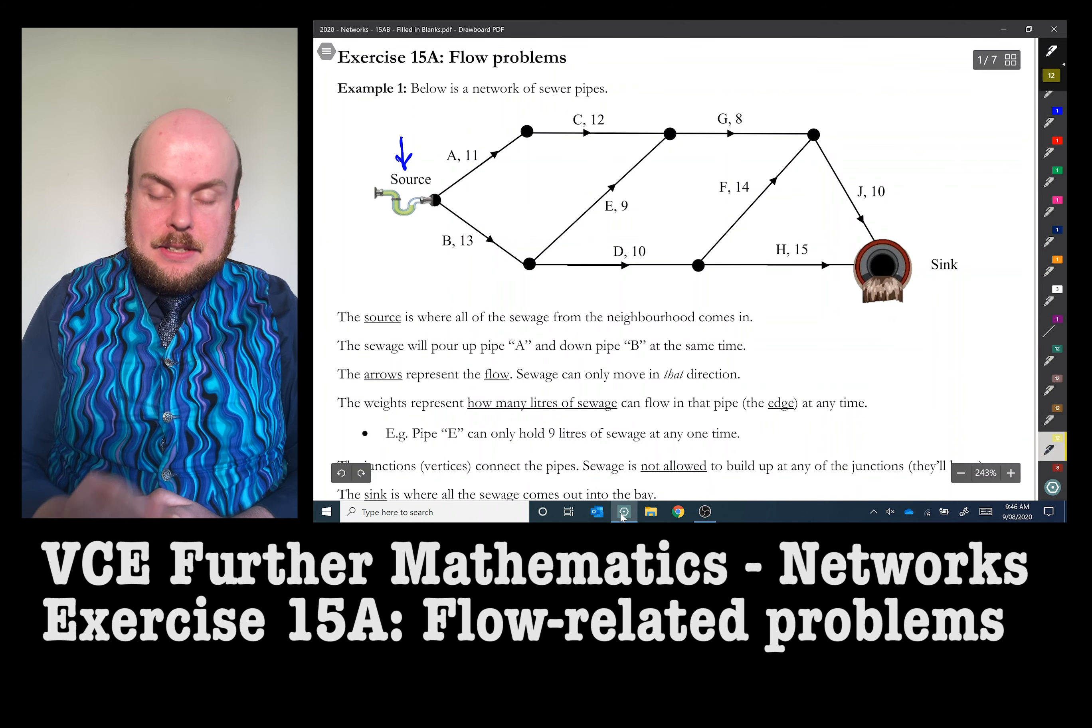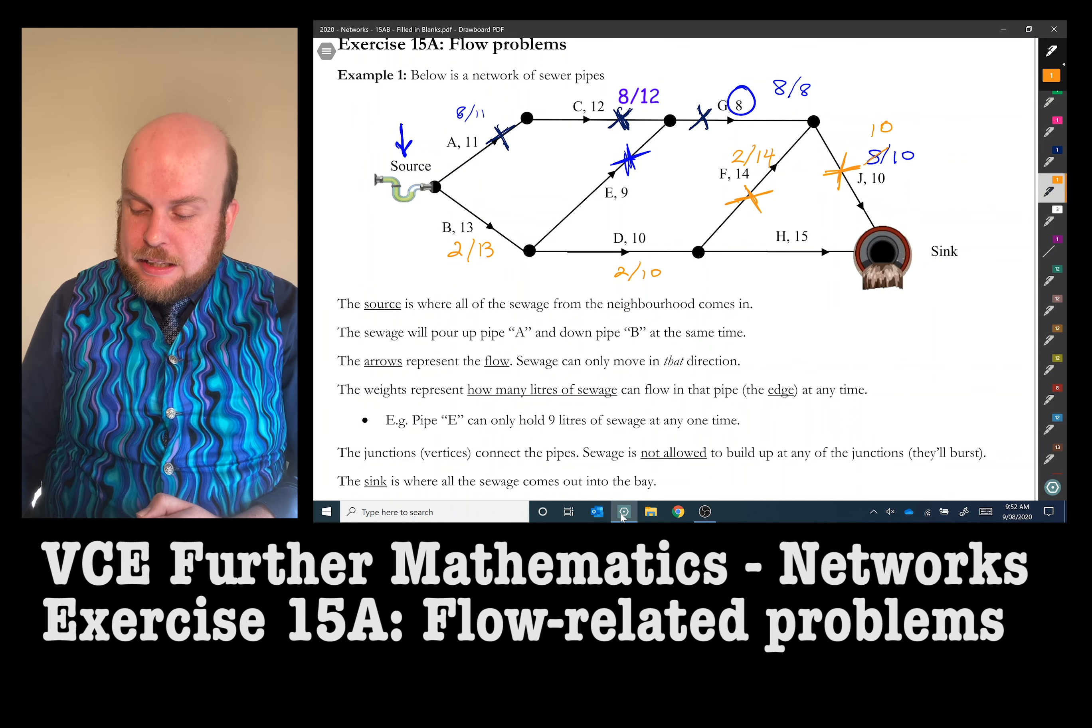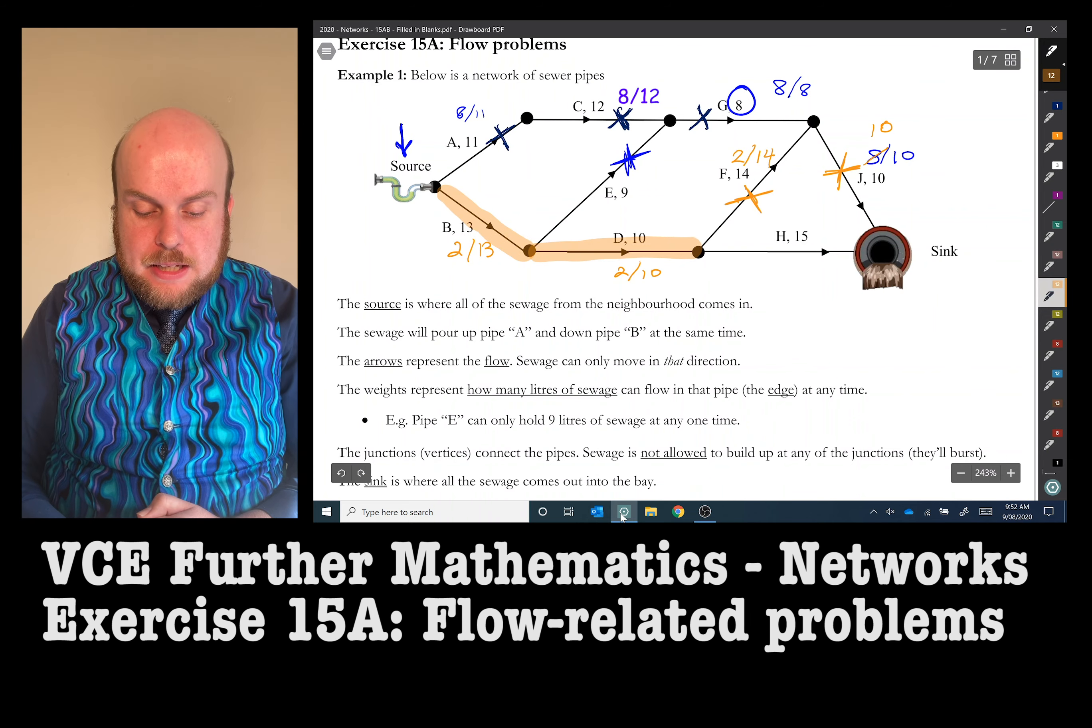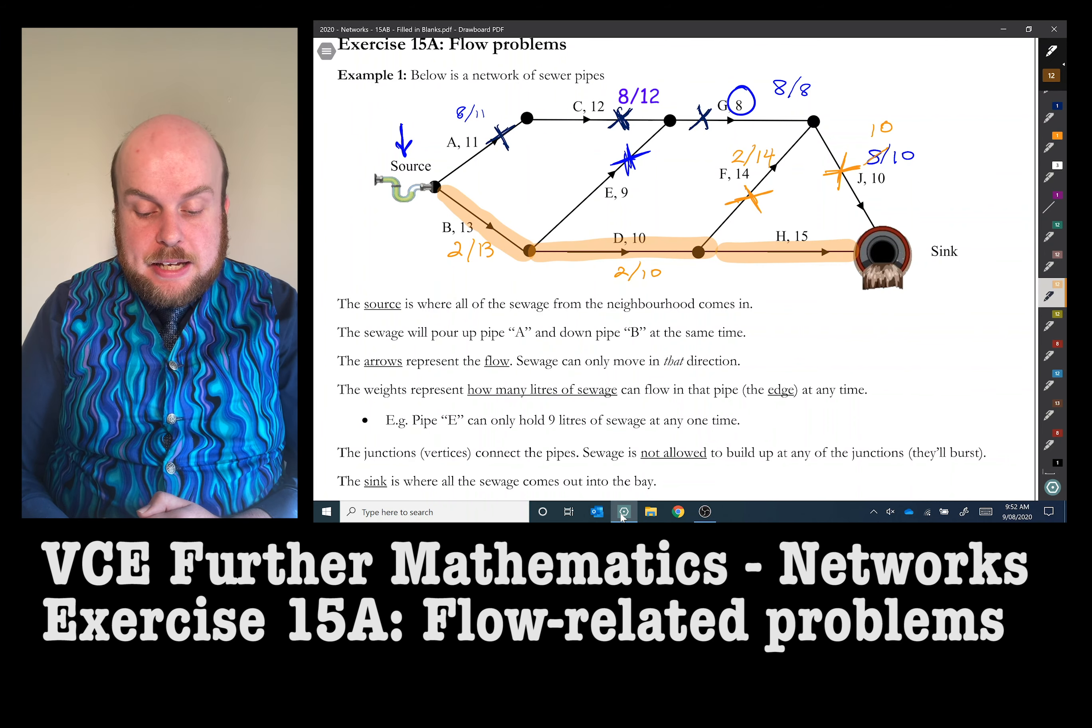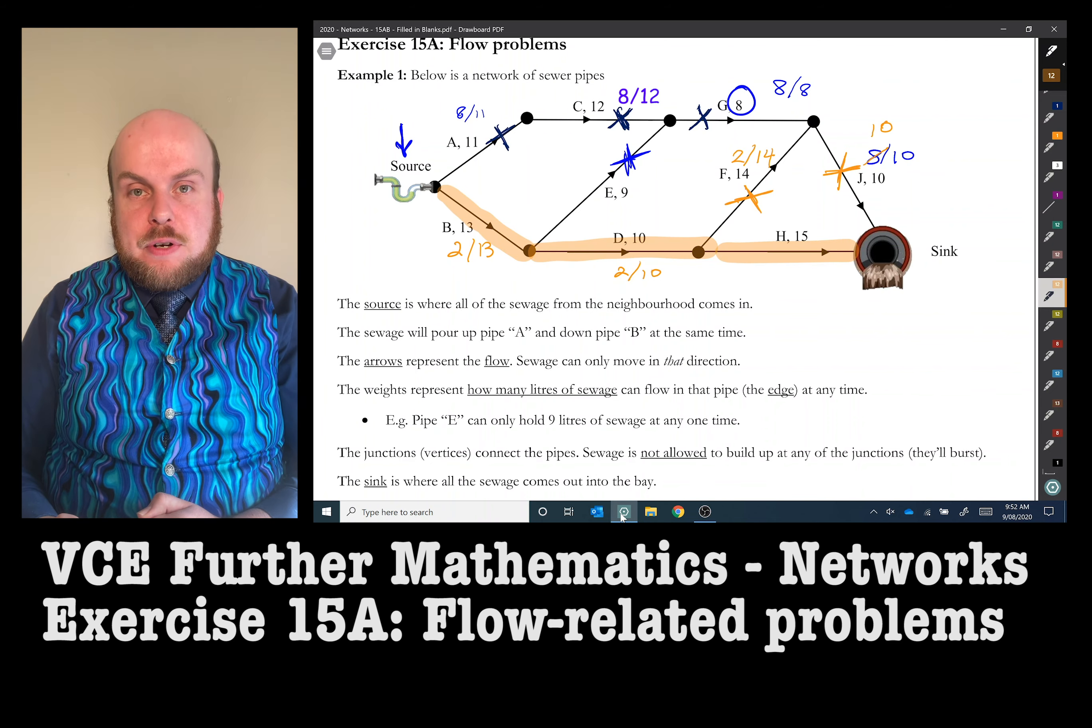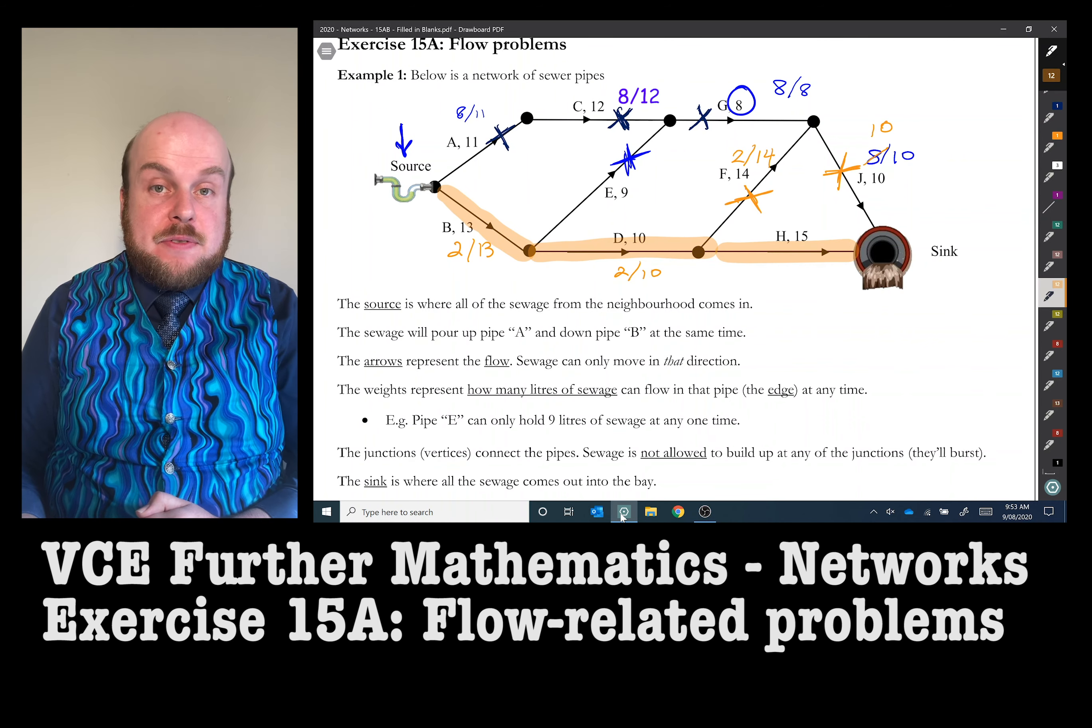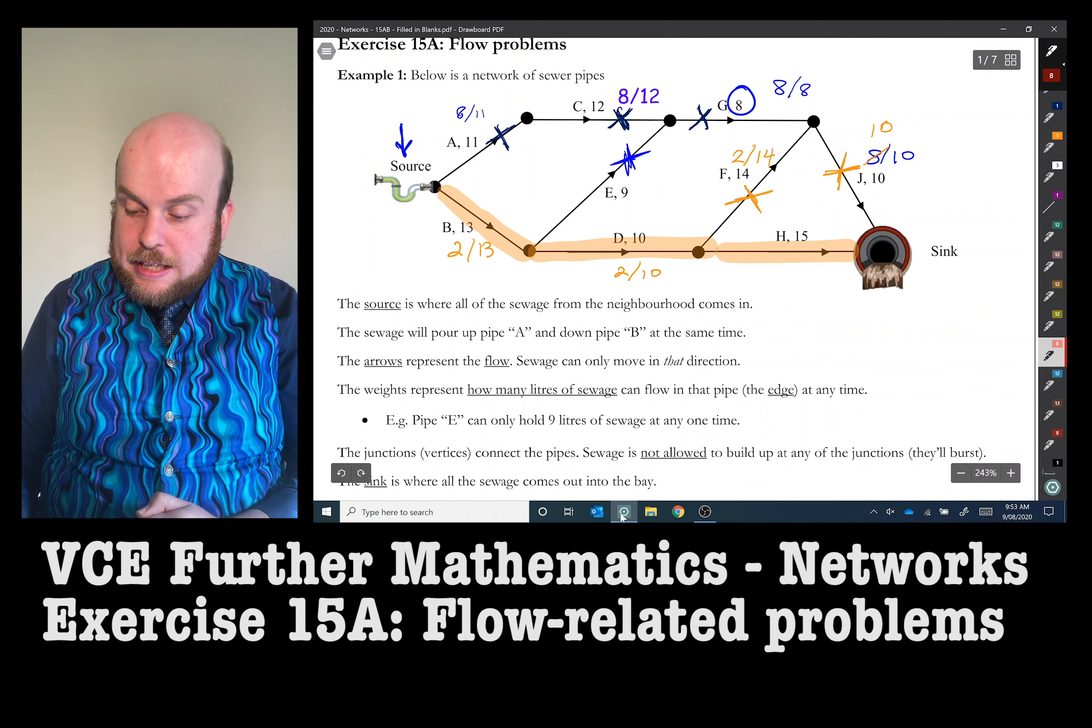Because J is now entirely used up, I can close that one off. F can't continue on because F immediately goes into J, so we'll close this off. So that means we now have the only flow that we can see is this one here. Two liters have already gone through up this way, so only 11 more liters can get through pipe B because 11 plus 2 is 13. Two liters have already been accounted for going through D, so that means only 8 more liters can get through. And 15, nothing's come through 15, so 15 can get through. So it is limited by the smallest size, which in this case is going to be that 8.